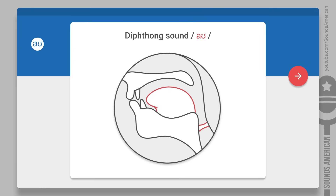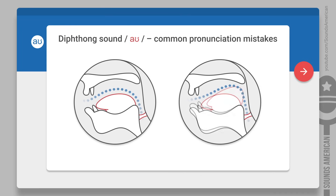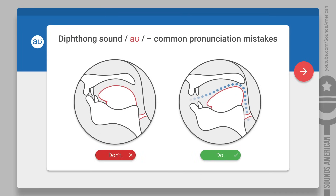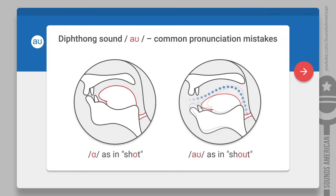Let's talk about the most typical mistakes that people make when pronouncing the OW diphthong. Number one: many non-native English speakers reduce the UH sound in the OW. As a result, the whole sound gets distorted and it may lead to misunderstandings. Compare: shot versus shout.